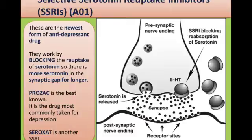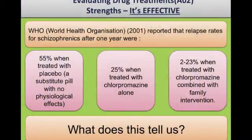For evaluation, the World Health Organization reports it's extremely effective drug therapy. When 55% of people relapsed after taking a placebo antipsychotic — a fake drug with only psychological effect — only 25% relapsed who had taken chlorpromazine, showing it was much more effective. However, research also shows that 2–23% of people treated with chlorpromazine combined with family intervention had the most effective outcome, suggesting psychological support alongside medication is key.